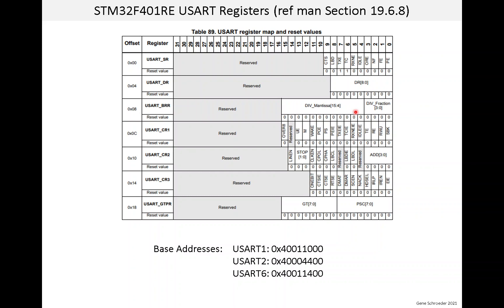To write software to operate this UART, you need one more thing: the base address of these registers. Because the MCU has several USARTs, you need a base address for each one. You will usually find base addresses in either the MCU datasheet or the MCU reference manual — for this MCU they are actually in both documents. The numbering of these USARTs is sort of odd: one, two, and six. That might make sense when you look at all the MCUs in this family, but in any case those are the USARTs on our MCU and those are the addresses.